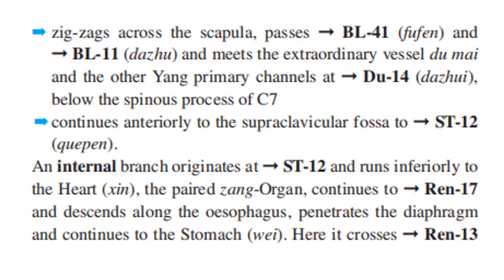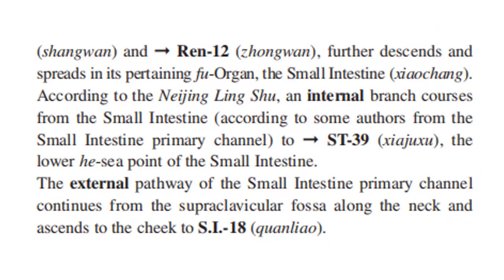An internal branch originates at Stomach 12 and runs inferiorly to the heart — the paired zang organ. It continues to REN17 and descends along the esophagus, penetrates the diaphragm, continues to the stomach where it crosses REN13 and REN12, and further descends and spreads in its pertaining organ, the small intestine.